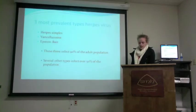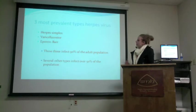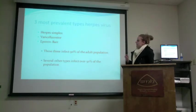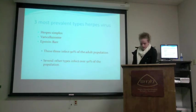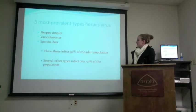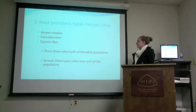The herpes virus has three prevalent types: herpes simplex, varicella-zoster, and Epstein-Barr. Just these three affect over 90% of the adult population. There are several others that infect over 50% of the population.